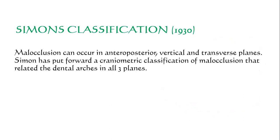The main drawback of Angle's classification is that it classifies malocclusion only in a single anteroposterior or sagittal plane, and considers the first permanent molar as a fixed point in the skull. There are basically three planes of space: anteroposterior, vertical, and transverse. Malocclusion can also occur in these three planes, so Simon put forward a craniometric classification of malocclusion.